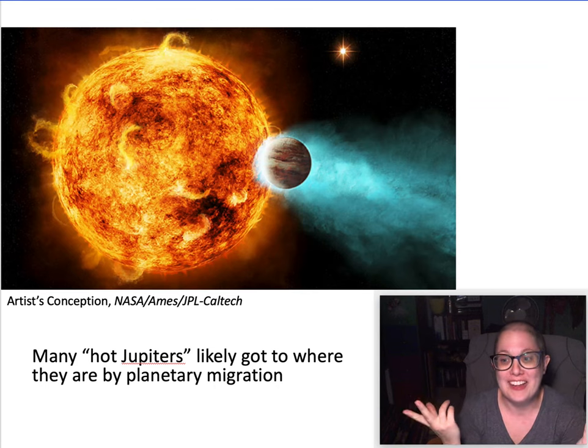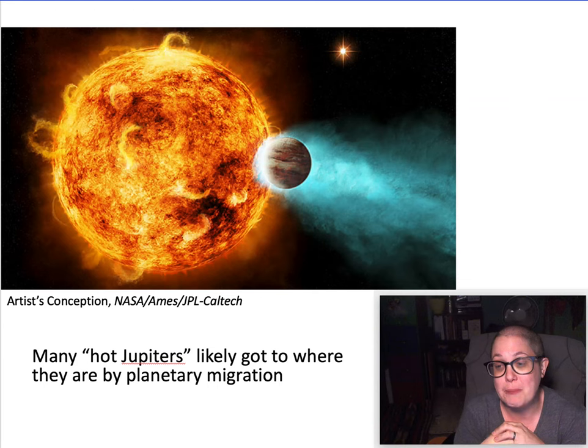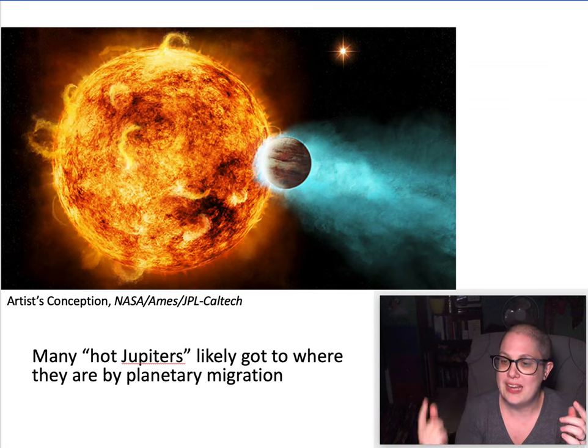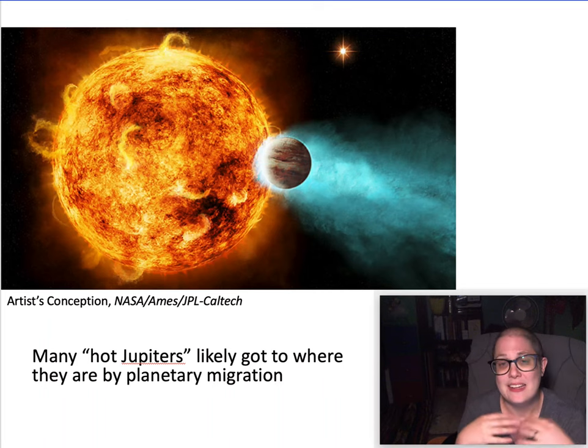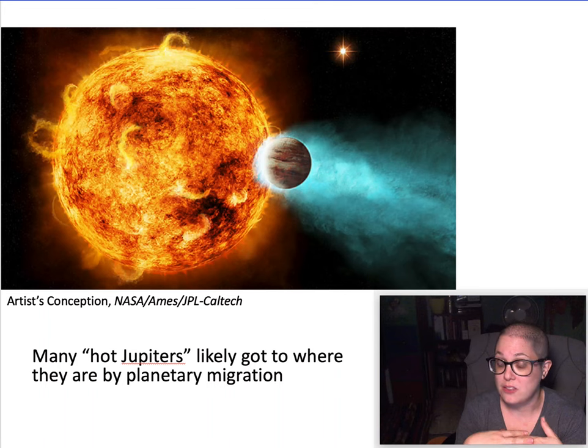So when observational astronomers started detecting all these gas giants super close to stars, the theorists were like, oh this is new. And eventually figured out a model of planetary migration where these large planets probably formed further out but came in. So you've got planets moving through solar systems, you've got really elliptical orbits, things are a bit more chaotic in a lot of these other systems than they are in our solar system.